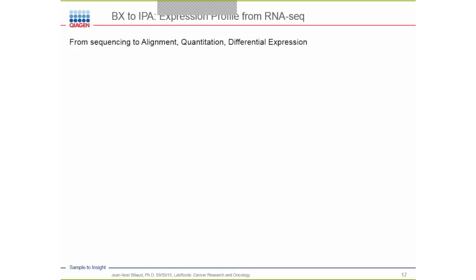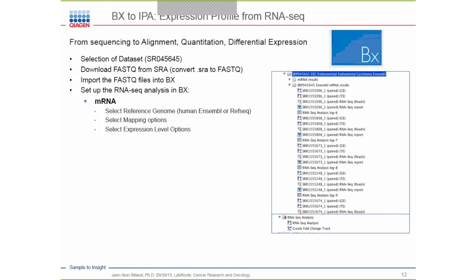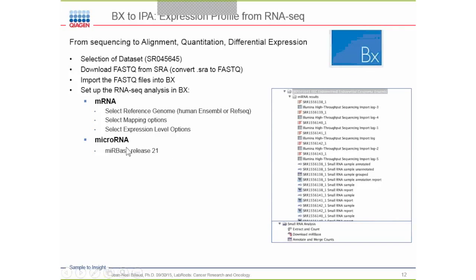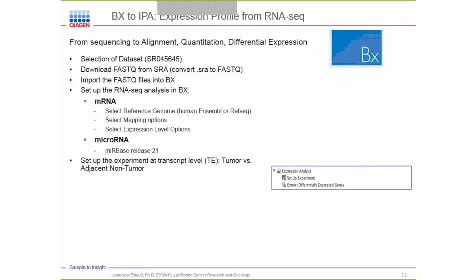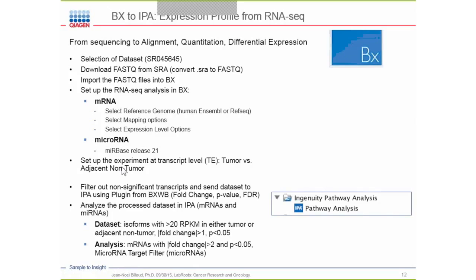Using Biomedical Genomic Workbench to IPA and looking at expression profile, you go from sequencing to alignment, quantitation, and differential expression. I selected the Chinese dataset, downloaded the FASTQ files from the SRA, imported them into BX, then set up the RNA-seq analysis at the mRNA level by selecting a reference genome, mapping options, and expression level. I also looked at the microRNA level using miRBase release 21. Then I set up an experiment at the transcript level comparing tumor versus adjacent non-tumor, filtered non-significant transcripts, and put the data forward to IPA for analysis.